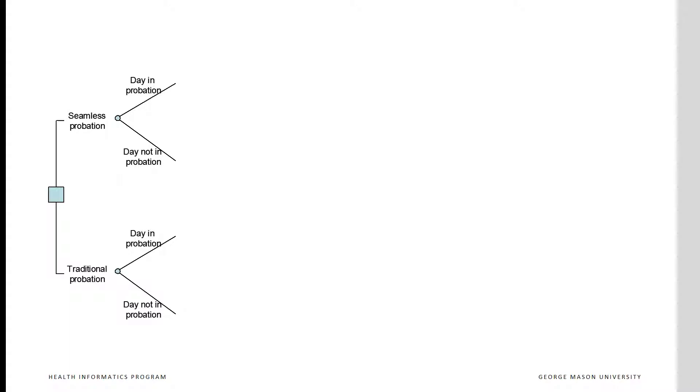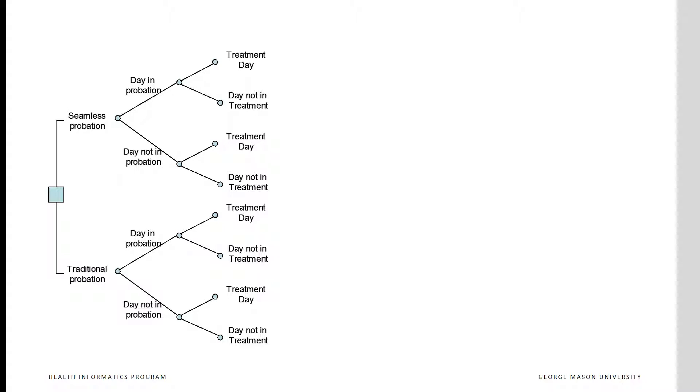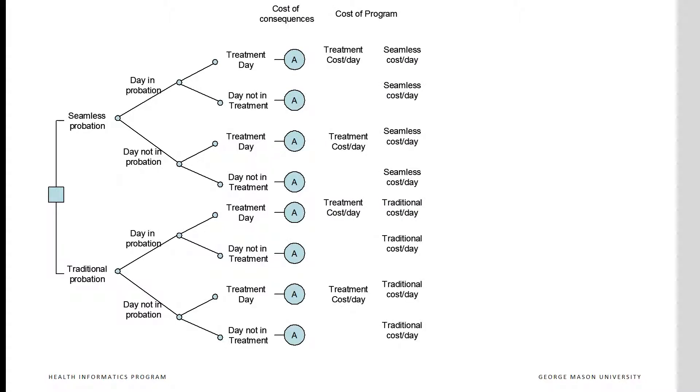Let us examine how we constructed the decision tree. The first component of the tree is the decision itself — in this case, the seamless integration of treatment and probation versus traditional separate delivery. The consequence of either of these decisions affects the number of days the client is in probation. Clients in seamless programs are monitored more closely, so they may have fewer days of probation and return to prison for technical violations. The seamless program may also increase the number of days clients participated in treatment.